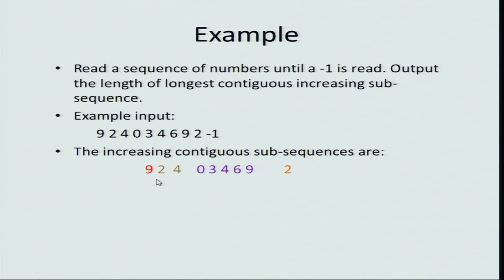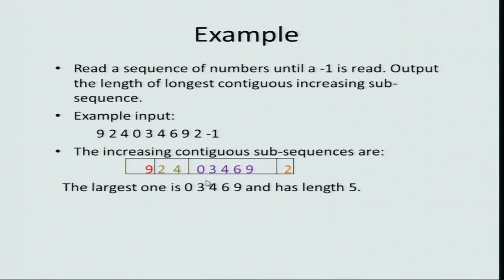So 2 is the start of a new sequence. The next number is 4, so 2 and 4 form an increasing sequence. The next number is 0, which is less than 4, so you break the sequence there. Then looking at the succeeding numbers 0 3 4 6 9, they form an increasing sequence, and the last number is 2 which is less than 9, so the increasing sequence stops. The longest contiguous subsequence is 0 3 4 6 9, and the length of that sequence is 5.